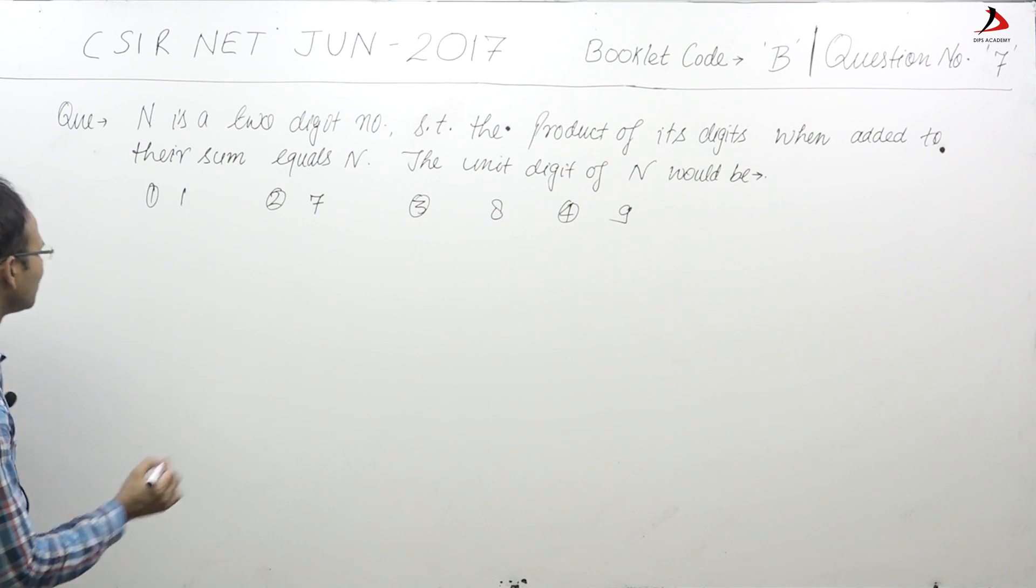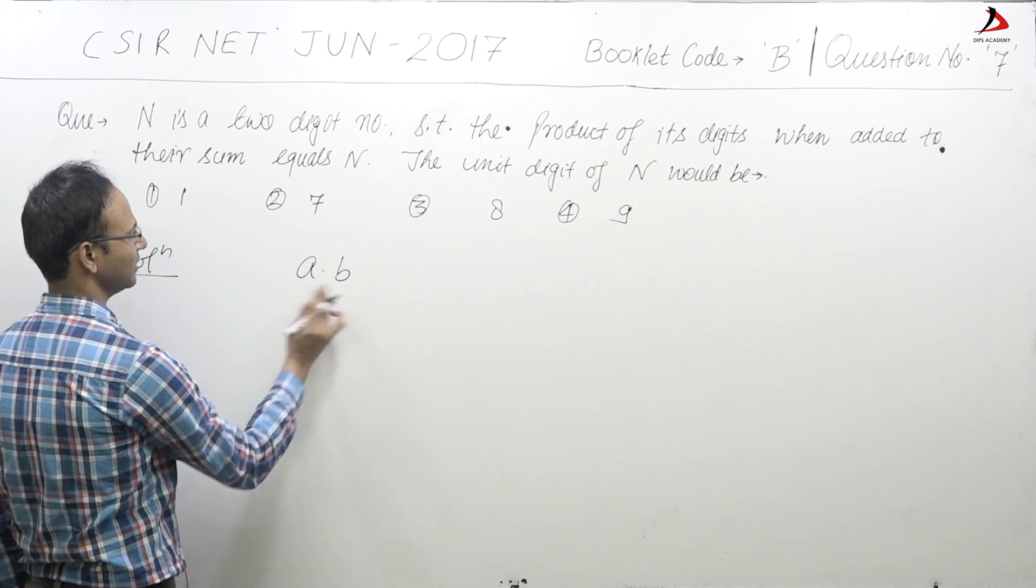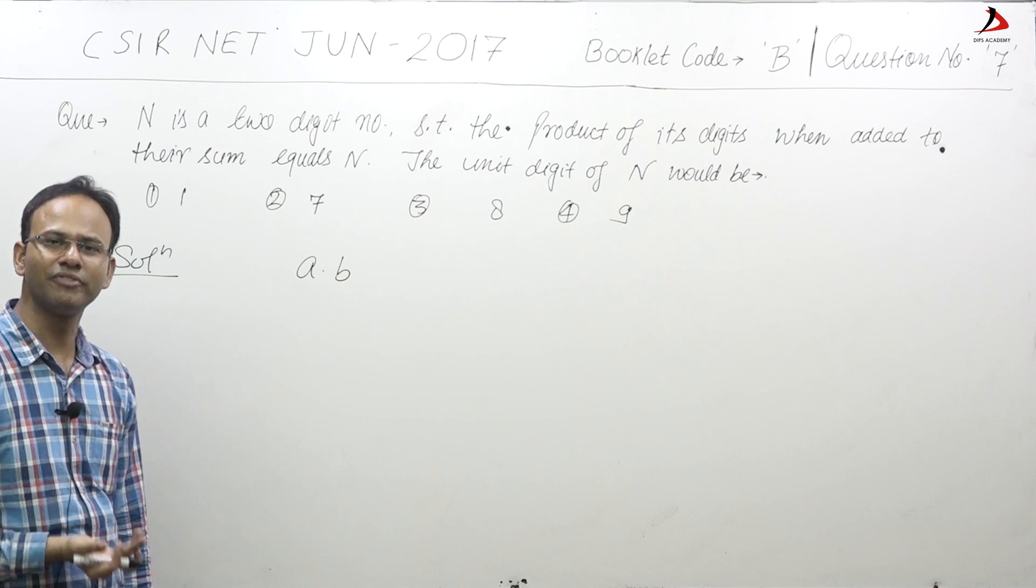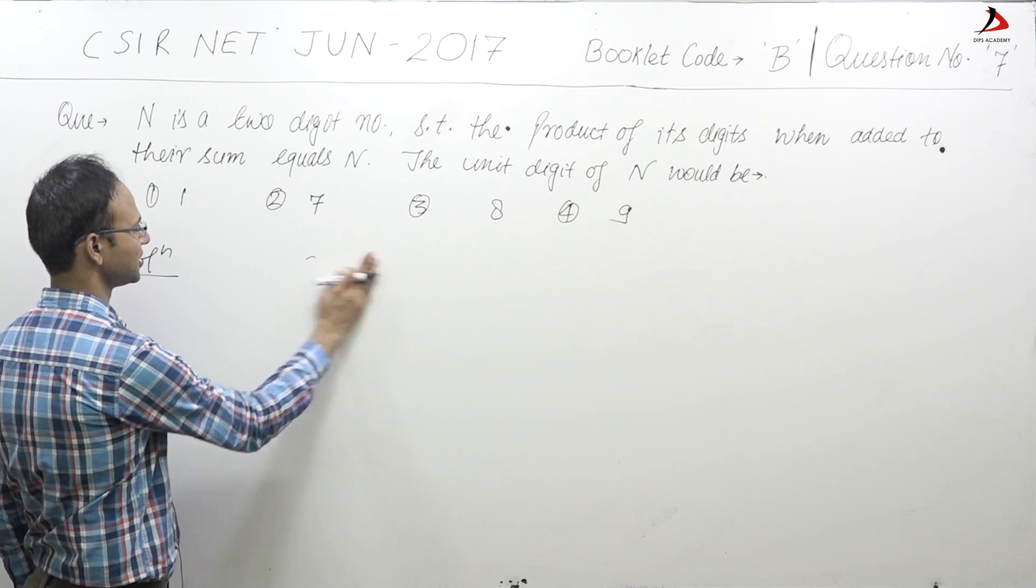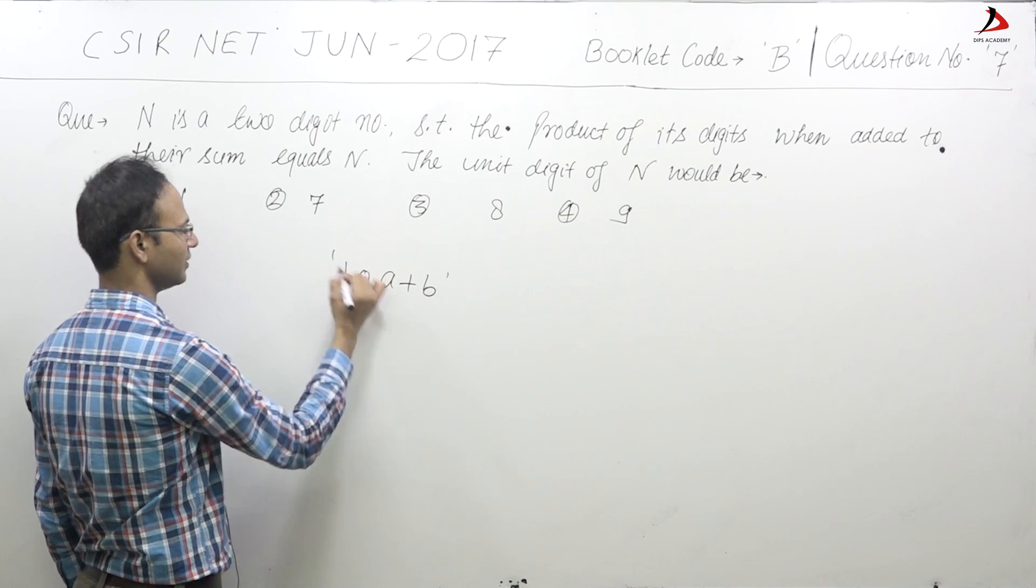Everybody, we need to observe this thing. If there is a two digit number AB, what is the general form of a two digit number? The general form of a two digit number is 10A plus B.